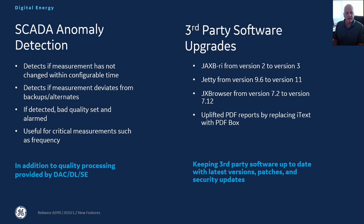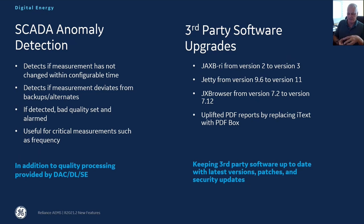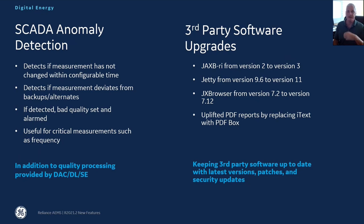Some more features have been added dealing with SCADA anomaly detection. In addition to the current SCADA anomaly detection — things like checking for values not being updated, values outside reasonability limits, and values identified as questionable — this new anomaly detection detects if there have been changes in significant or important measurements. For example, a frequency measurement would be expected to be constantly updating and changing. This allows you to check that it is actually occurring — maybe it has a good quality code and is being brought in correctly from the measuring device, but for whatever reason it's flatlining. The anomaly detection would detect that situation, alarm it, and apply a bad quality so that downstream applications know the value is now suspect.